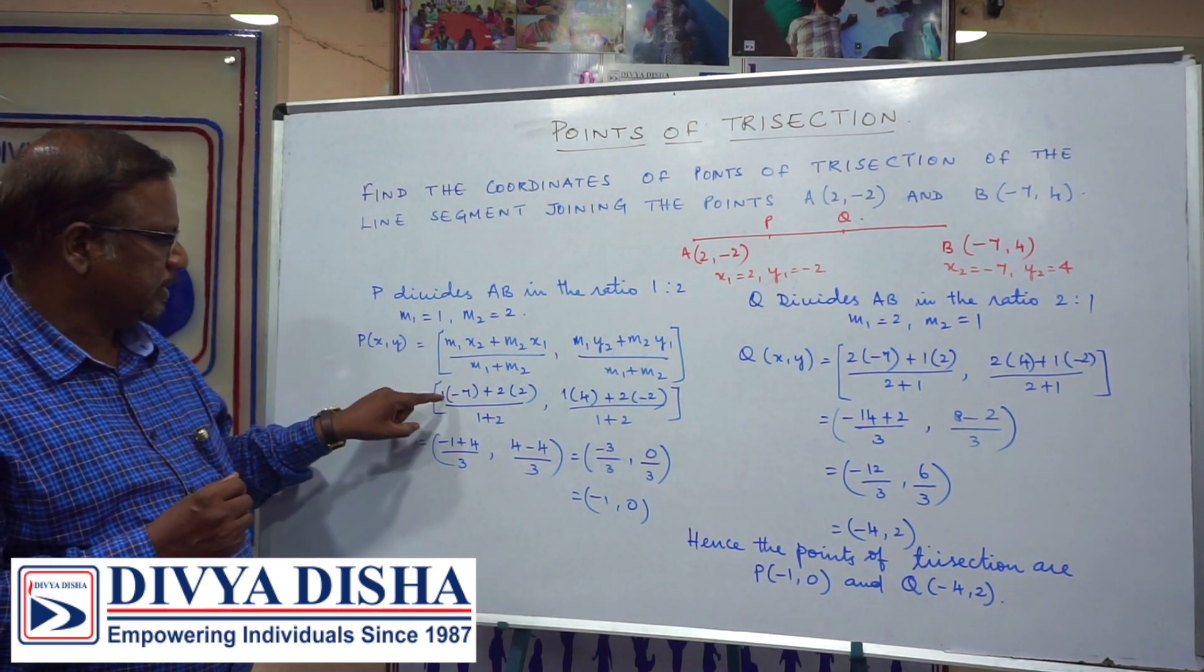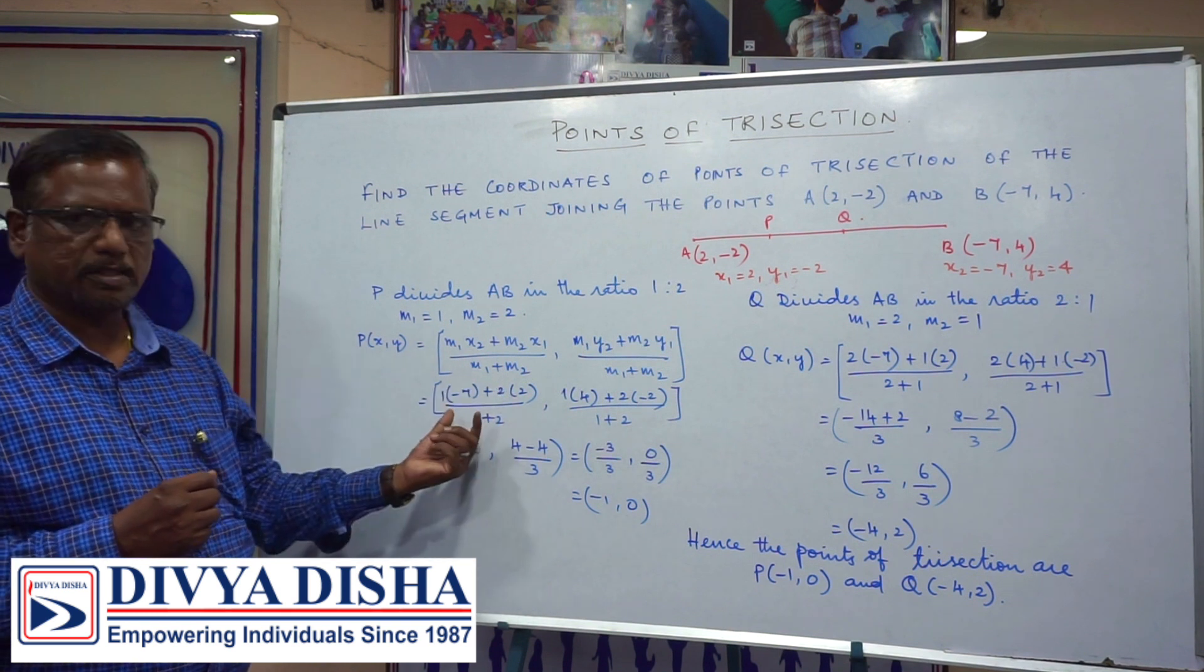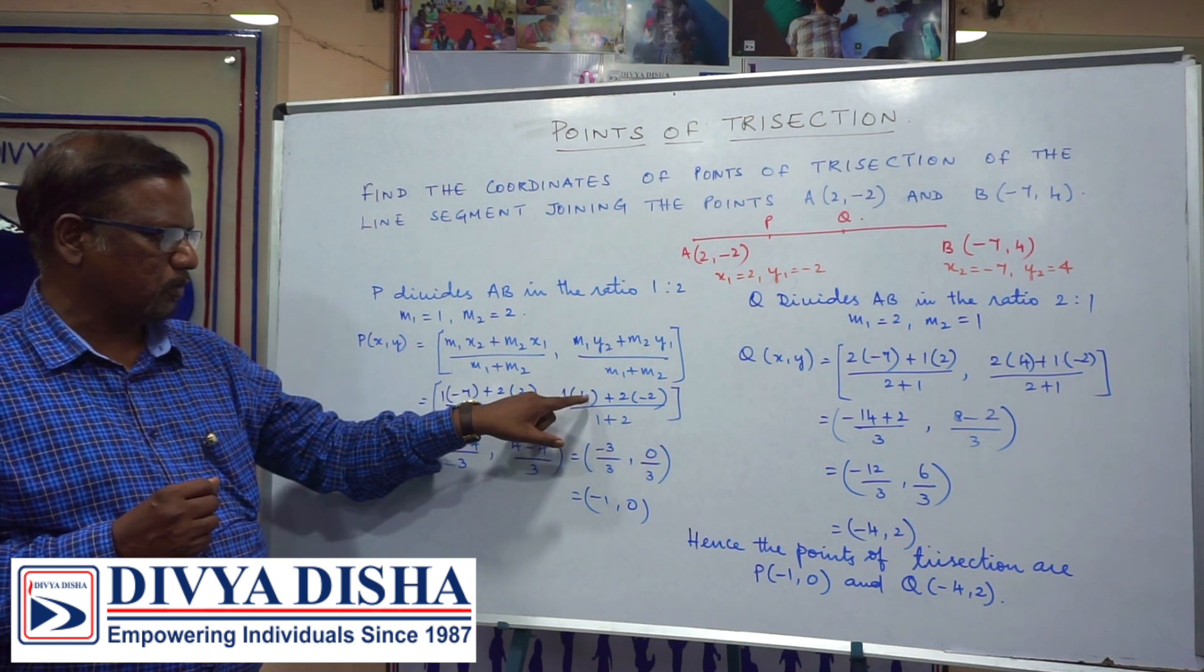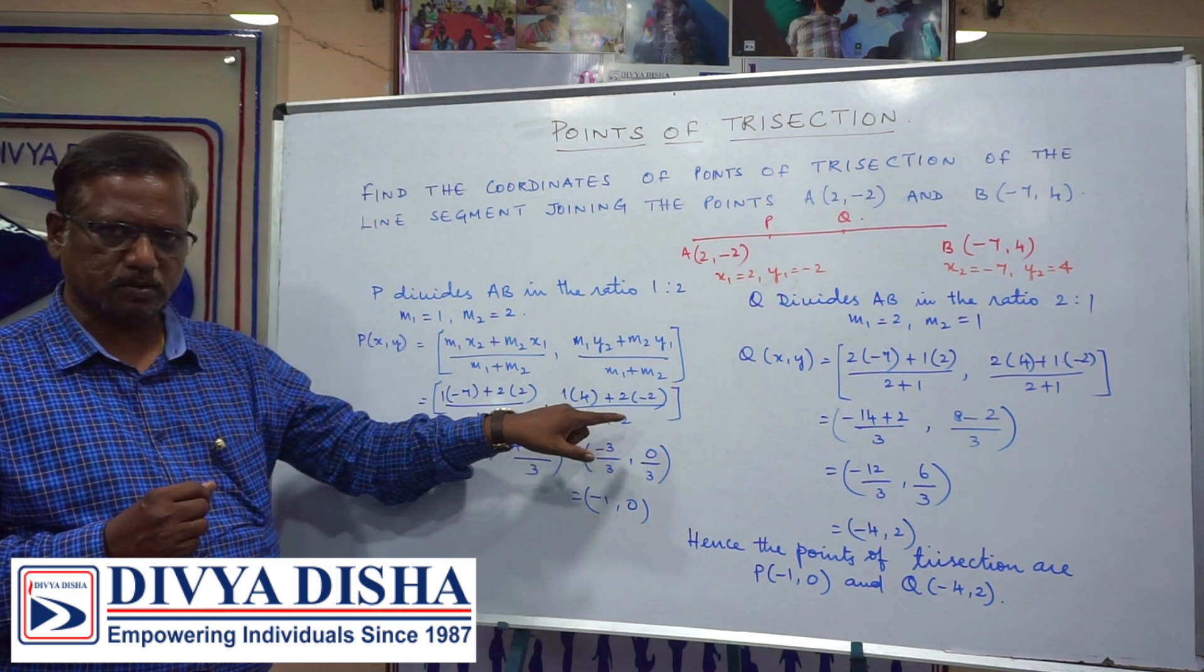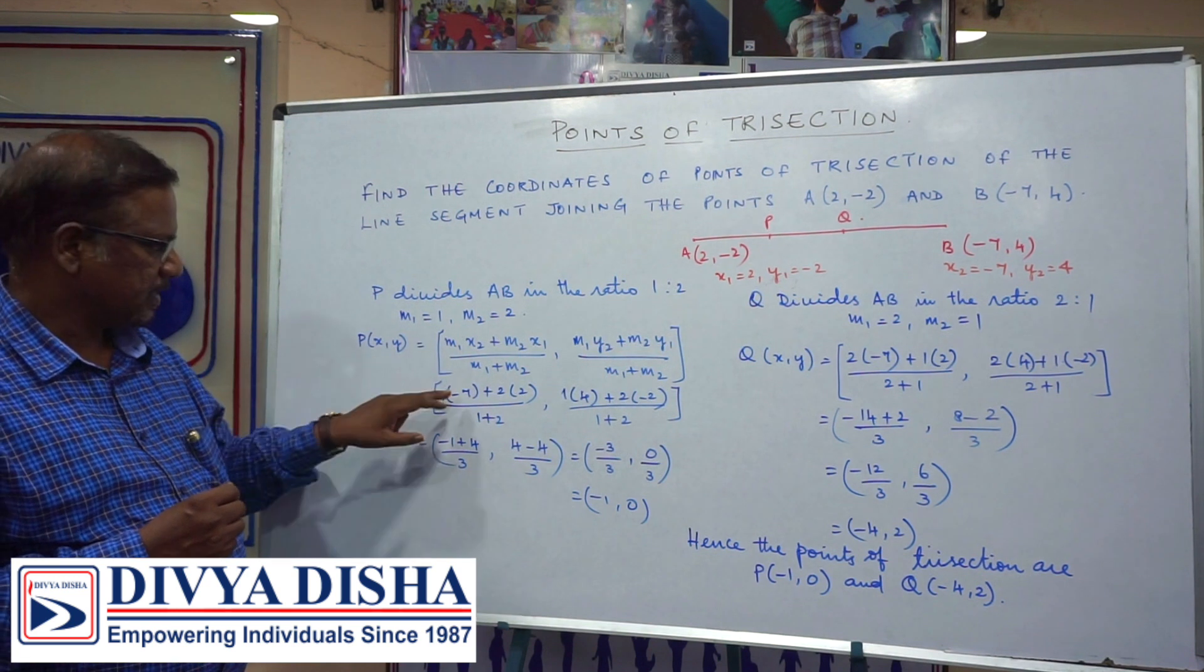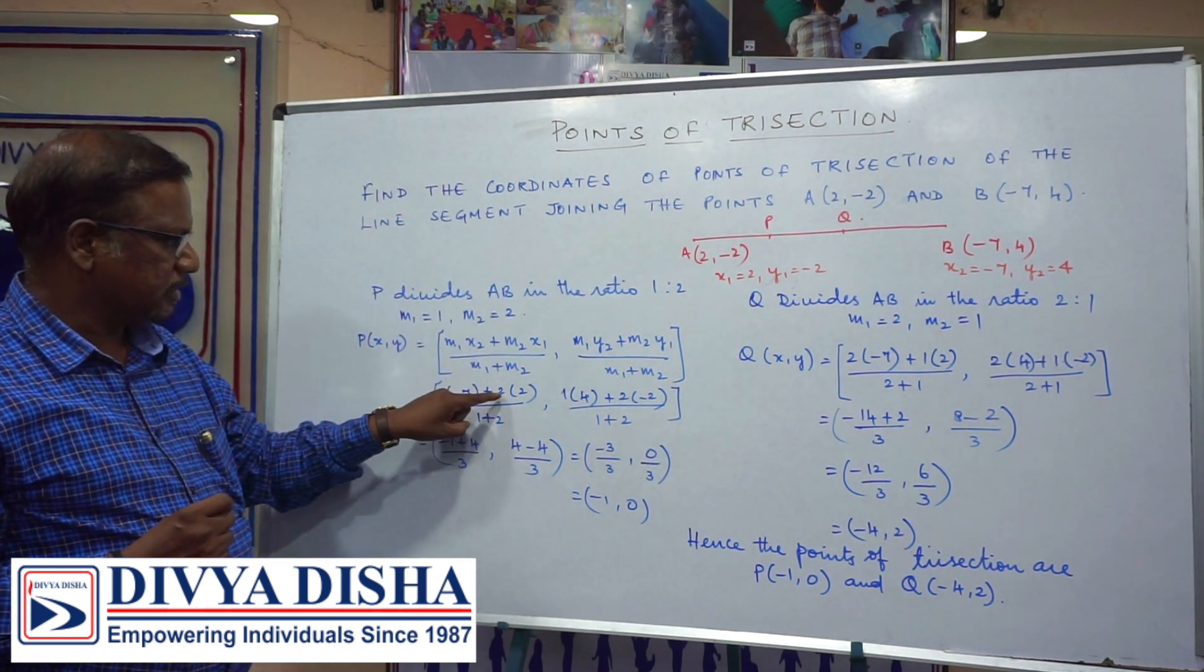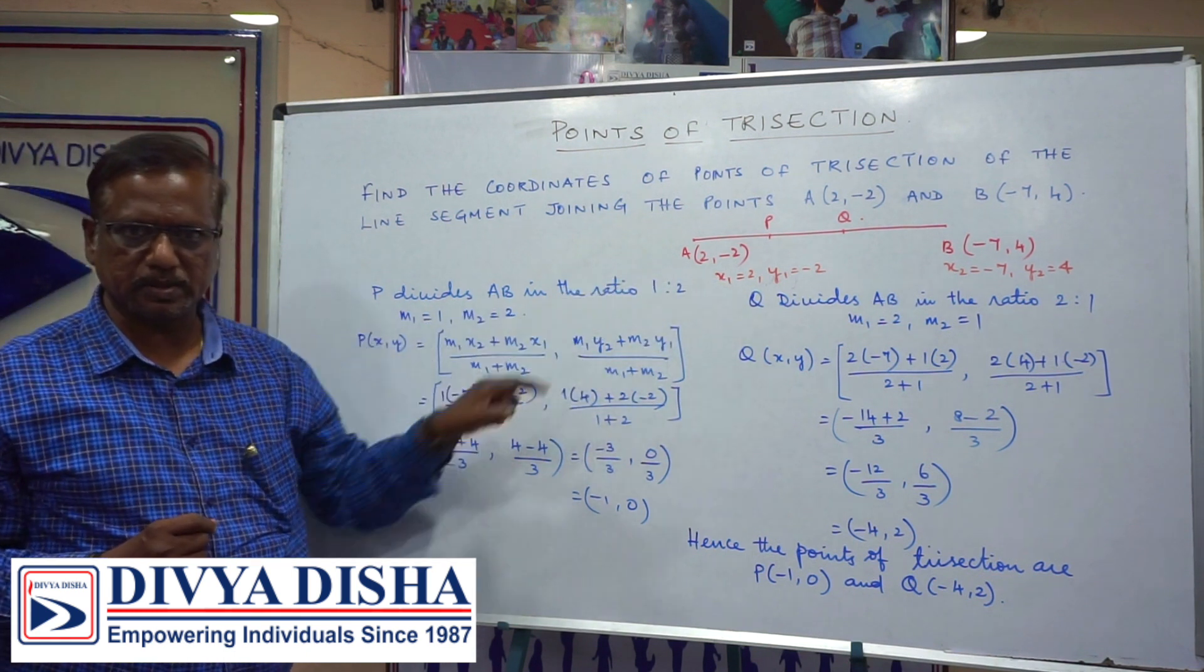It is 1 into -7 plus 2 into 2 divided by 1 plus 2, and 1 into 4 plus 2 into -2 divided by 1 plus 2. Here 1 is m1, this is x2, m2 is 2, and x1 is the value there.